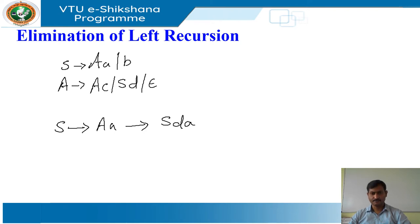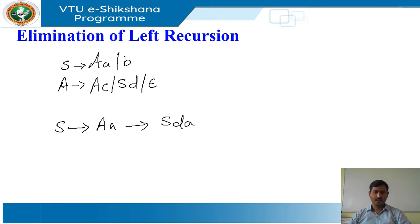Let us see the algorithm that systematically eliminates left recursion from the grammar. It is guaranteed to work if the grammar has no cycles or epsilon productions. Cycles can be eliminated systematically from the grammar, as can epsilon productions.